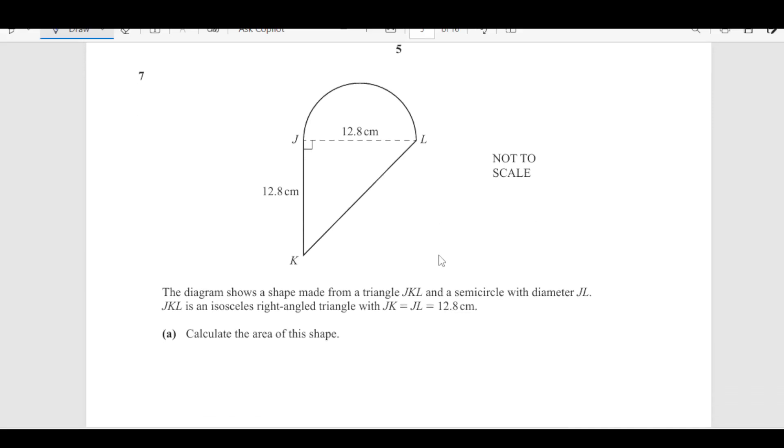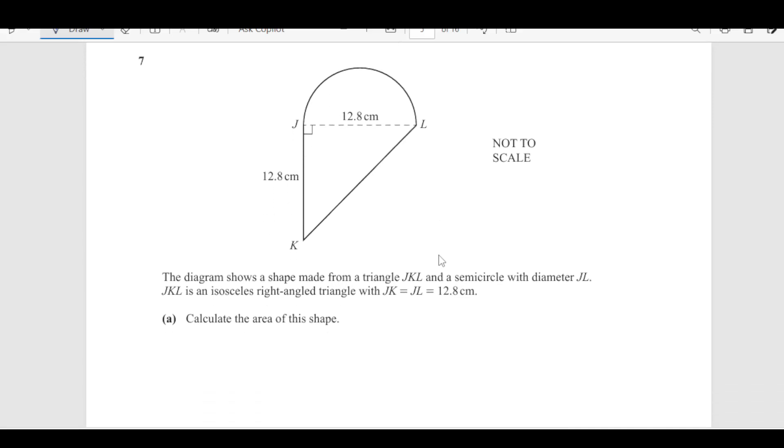Now, number 7. We have another diagram here. There is a semicircle and there is one triangle here. The diagram shows a shape made from triangle JKL and the semicircle with diameter JL. JKL is an isosceles right angle triangle with JK equals JL equals to 12.8. As this is the diameter, the radius is going to be 12.8 divided by 2 which is 6.4 centimeters.